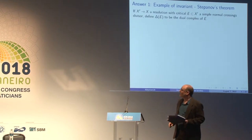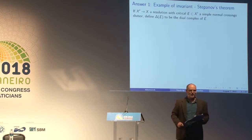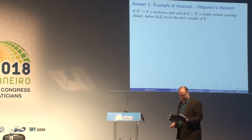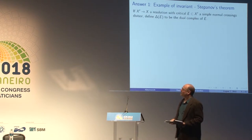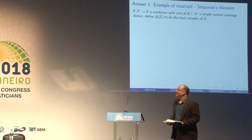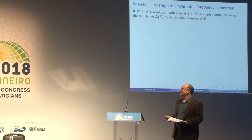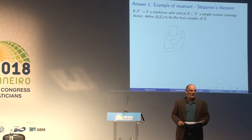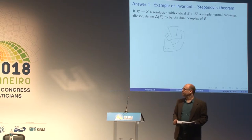Here's an example of an invariant that is proven to be an invariant of a singularity using resolution of singularities. If you have a resolution of singularities of a variety X with exceptional locus E, which is a simple normal crossing divisor, you can define the dual complex of E: for every component you put a point, for every intersection of components you put an edge.